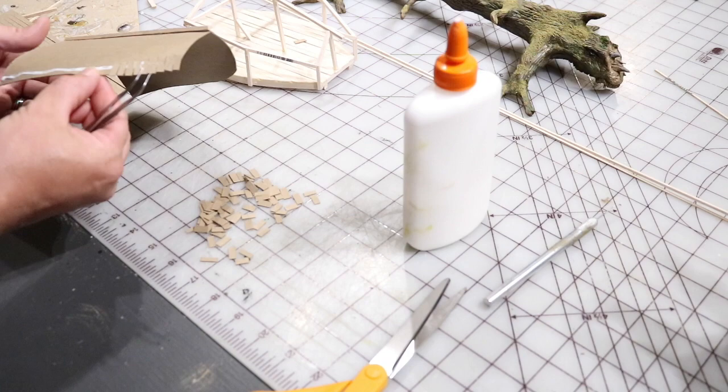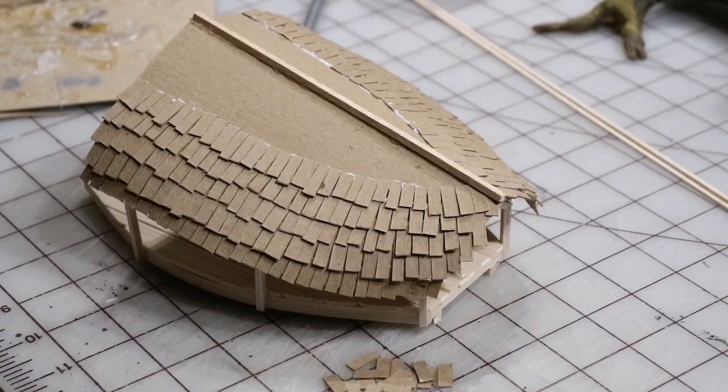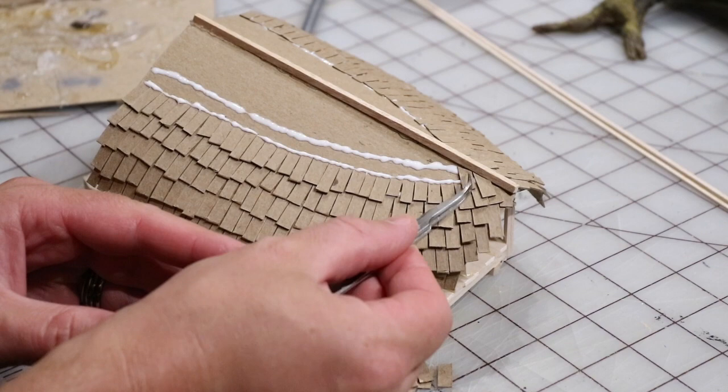Just going along with some white glue and attaching each of the shingles into place, overlapping them row after row. And once you reach the peak you'll see how I do the overlap and also angle the shingles so that it matches the angle of the peak.